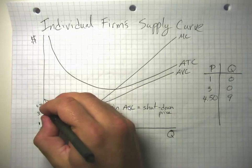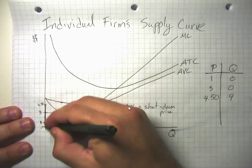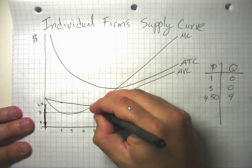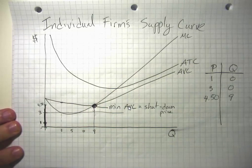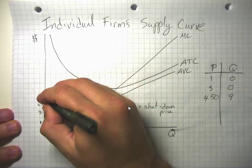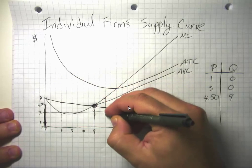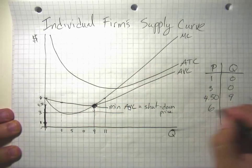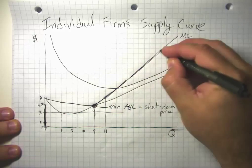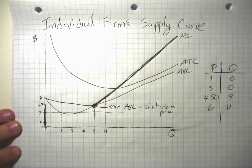If we were drawing the supply curve, it would essentially be zero units up until a price of $4.50, and then suddenly we're going to jump out to nine units at that price. Then as we have further price rises, say prices rose to $6, then this firm is willing to supply 11 units.